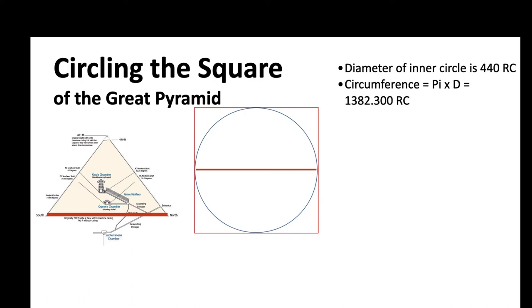We've got the diameter of the inner circle, and its circumference is pi times d, so 440 times pi is 1,382 royal cubits.